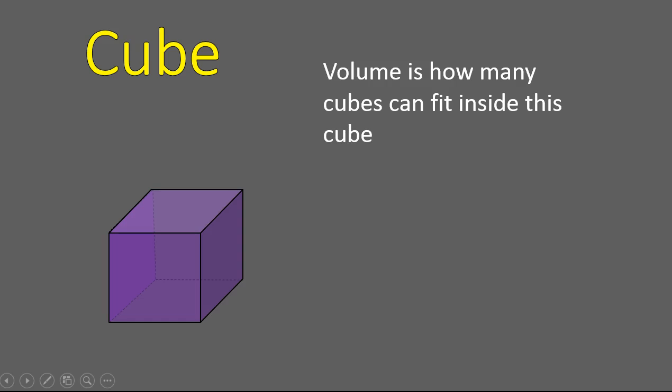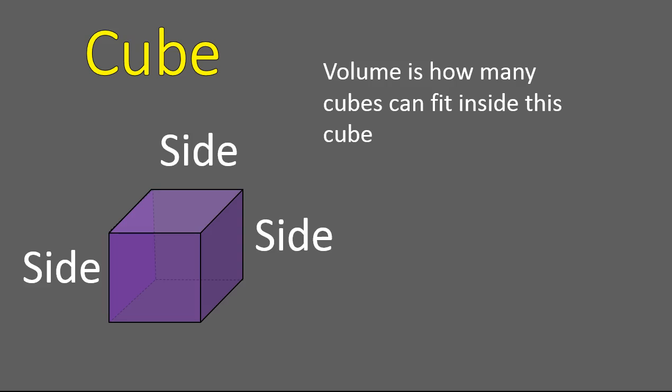Now we move on to a cube. A cube is a three-dimensional figure where all of the faces are squares. Instead of having a length and height, you have side, side, side — and all of those measurements are exactly the same. The way that we calculate volume is that we use cubes to fit inside of the larger cube, similar to how we used squares to fill in squares. We measure volume in cubes.